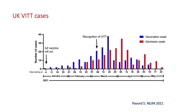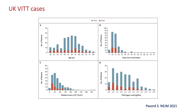Looking at VITT UK cases, around March and April we had up to 40 cases per week of this incredibly rare condition that none of us had seen before. Data on patients by age show alive cases in blue and deaths in red, with people developing VITT very quickly after vaccination and presenting with very low platelet counts. Overall VITT mortality was 20%, but initially it was 50%, compared to less than 1% for ITP.